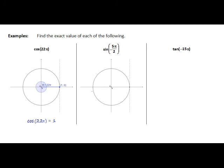A further 90 degrees clockwise is 3 pi on 2. A further 90 degrees clockwise is 4 pi on 2. And a final further 90 degrees clockwise will take me to 5 pi on 2, which occurs down here at the negative y axis. So negative 5 pi on 2 occurs down here at the negative y axis.